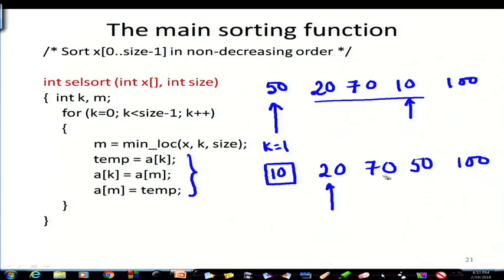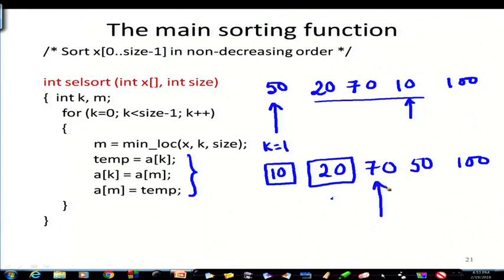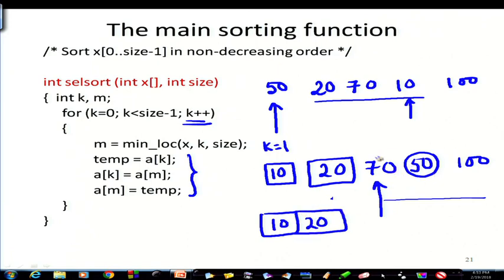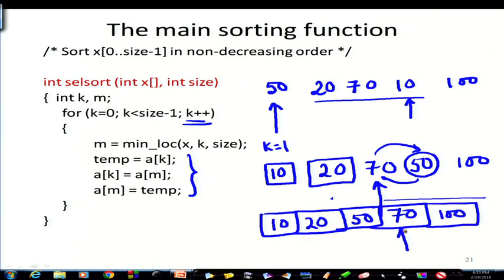With k at 1, we find min_loc — 20 is the minimum, no exchange needed. k is incremented to 2; we search from position 2 onwards and find 50 is the minimum, so 50 and 70 are swapped. Then k moves again; 70 and 100 remain in place. So we get the sorted array.